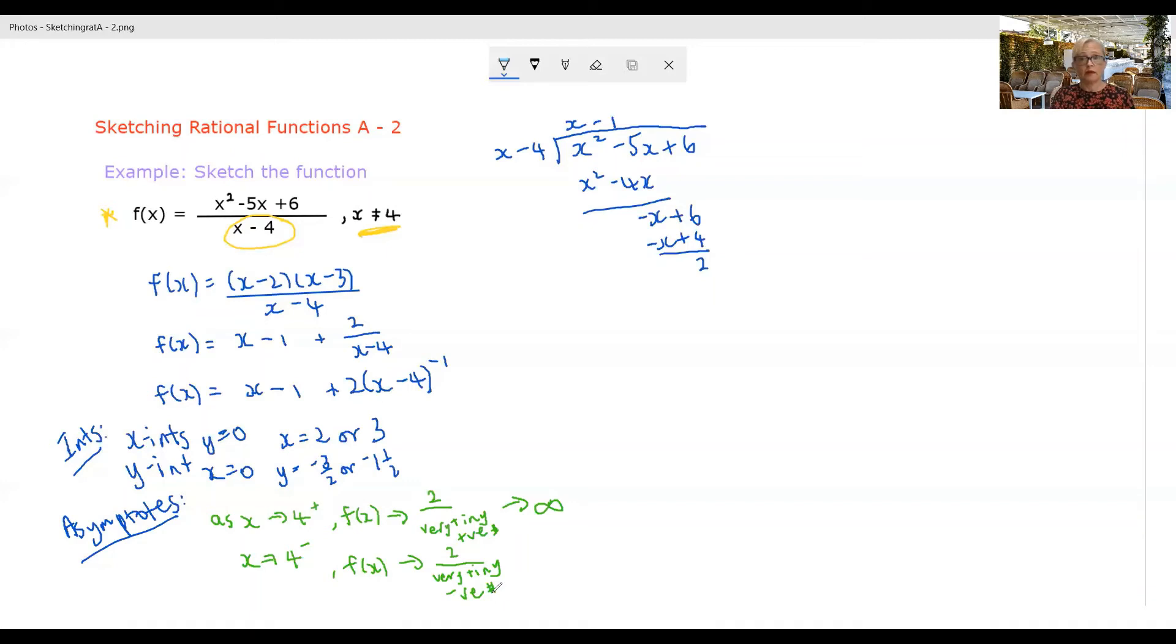It will be a very tiny negative number, but it will be negative nonetheless. And the tinier that gets, the bigger that gets. So f of x will be tending towards negative infinity.